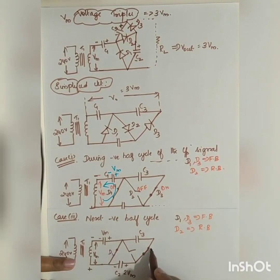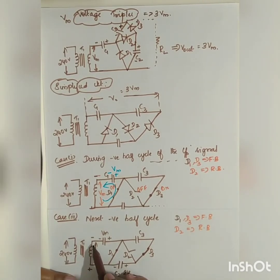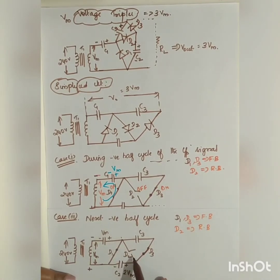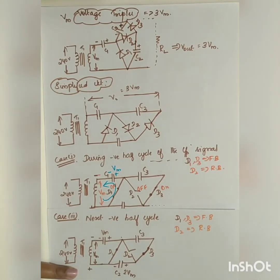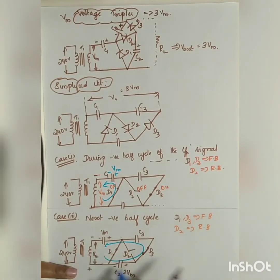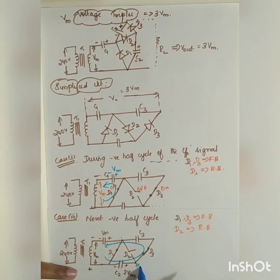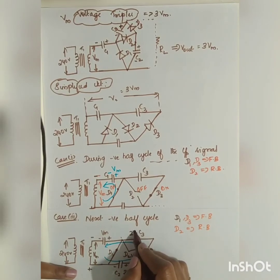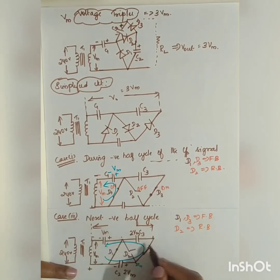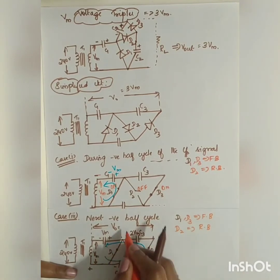In Case 3, D1 and D3 are forward biased and D2 is reverse biased. The potential difference at the D3 path is 2Vm (from the already-charged C2), so capacitor C3 charges to 2Vm. Taking the output across C1 and C3 in series: V0 = 2Vm + Vm = 3Vm. This is the working principle of the voltage tripler.